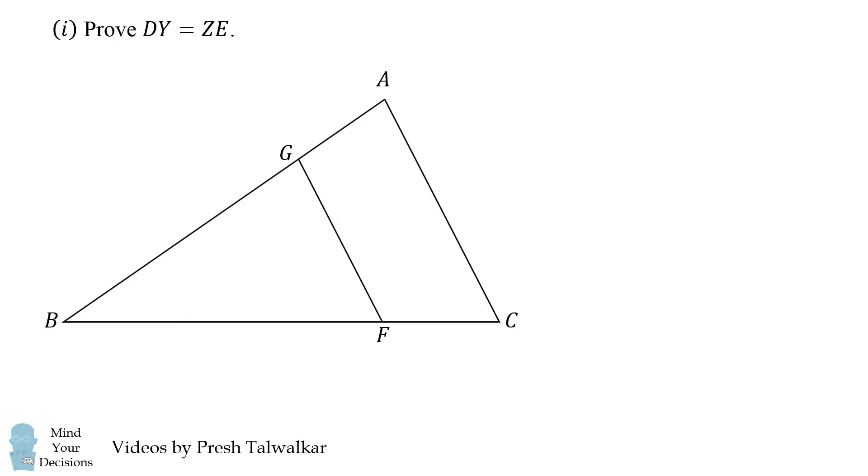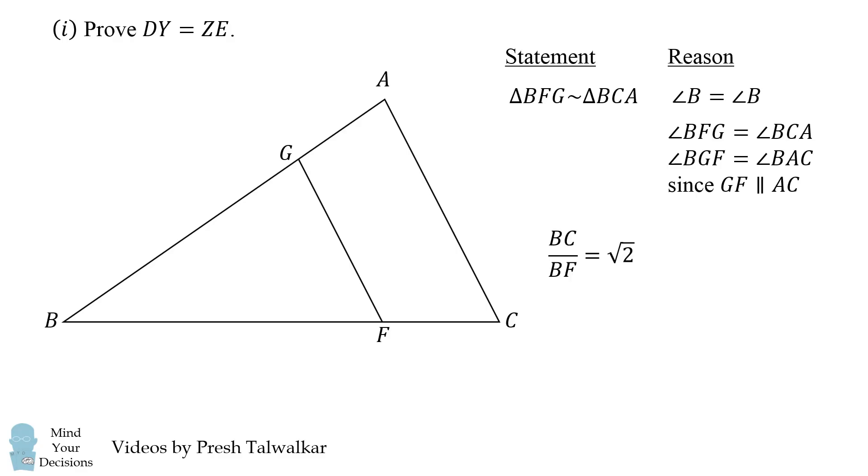So let's get started by focusing just on these two triangles. The first thing I will claim is that triangle BFG is similar to triangle BCA. This is because both triangles share the common angle B, and their other angles are equal because they are corresponding angles of parallel lines GF and AC. Next we have that BC divided by BF is equal to the square root of 2. This is because the triangles are similar and it's given that AC divided by GF is equal to the square root of 2.